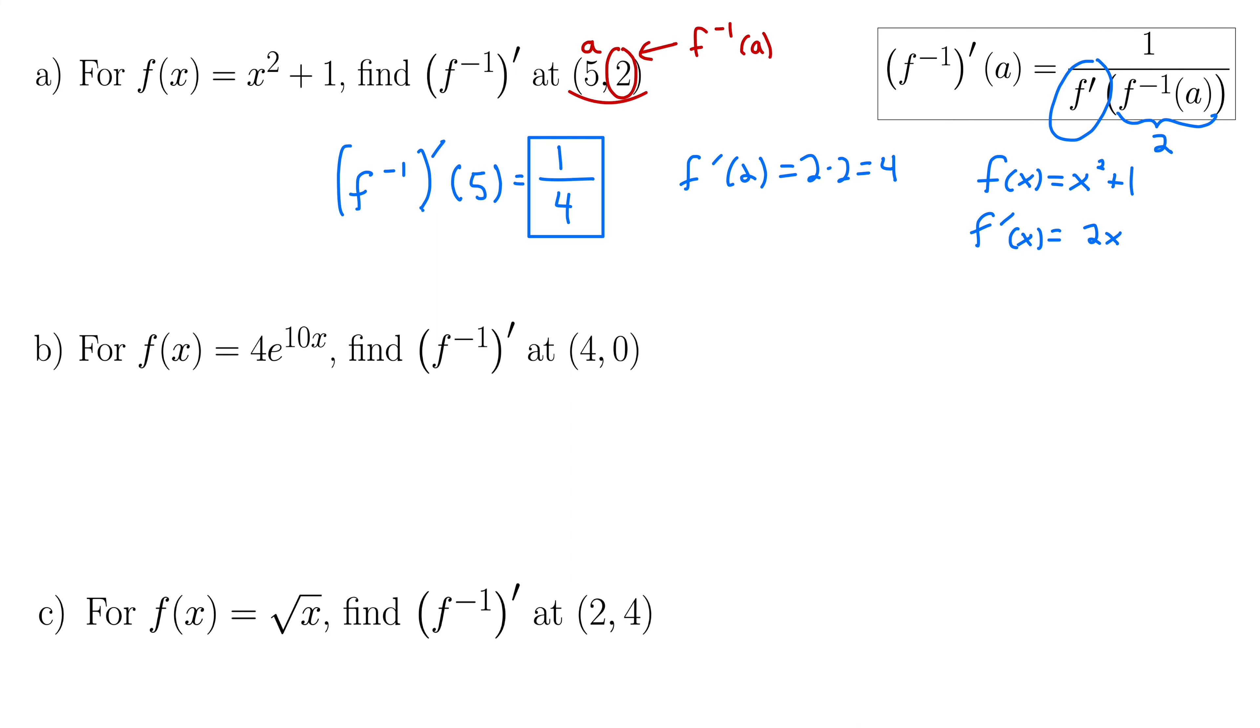Let's look at part b. It says for f(x) equals 4e^(10x), find f⁻¹'(a) at the point (4,0). Well here's our theorem, so we can work directly off of that. Again, this tells us how to find the derivative of the inverse function at a point a. We're going to work on the right hand side here, we're going to work from the inside out. So first, f⁻¹(a). Well a point is given, so we're in luck. So this 4 is our a, which tells us that 0 is f⁻¹(a), or f⁻¹(4) in this case. So we already know that this bit here inside these parentheses is 0.